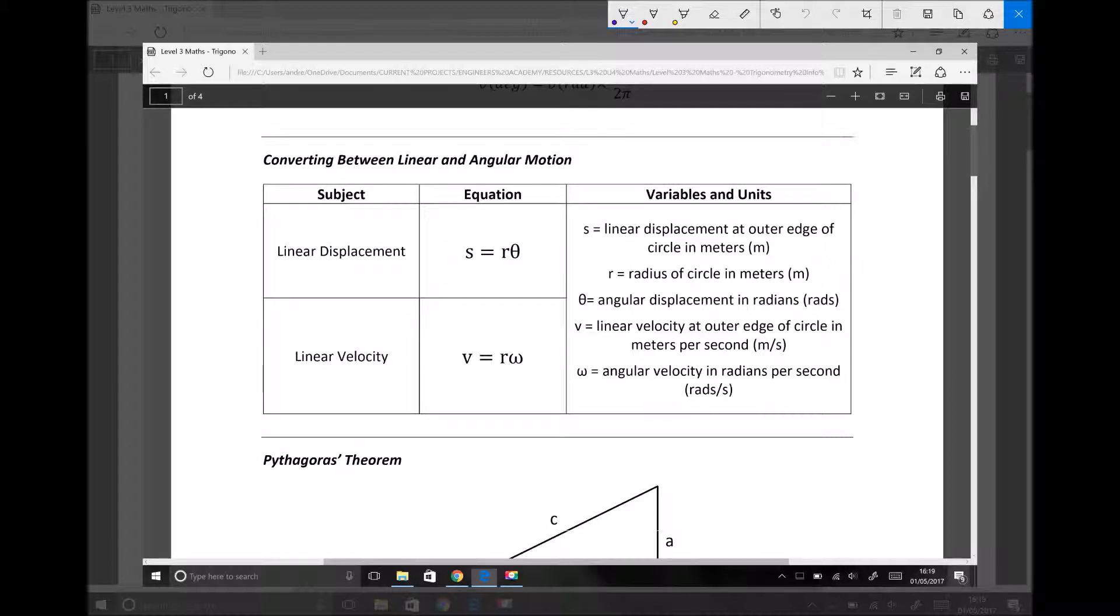If for example you wanted to calculate S which is the linear displacement at the outer edge of the circle in meters, then all you would need to do is multiply the radius of the circle in meters by the angular displacement. But that must be the angular displacement in radians. Providing we input the angular displacement in radians, multiplying it by the radius of the circle will give us the linear displacement in meters.